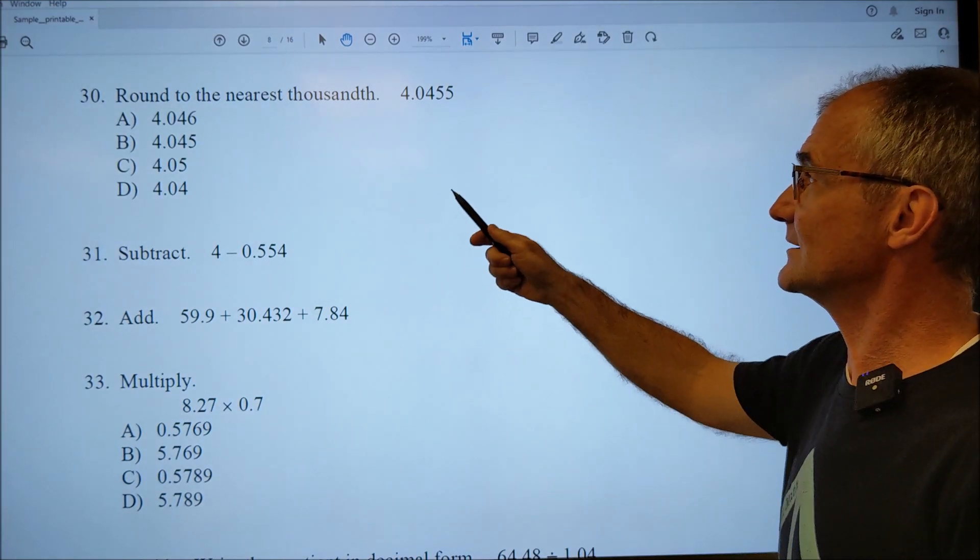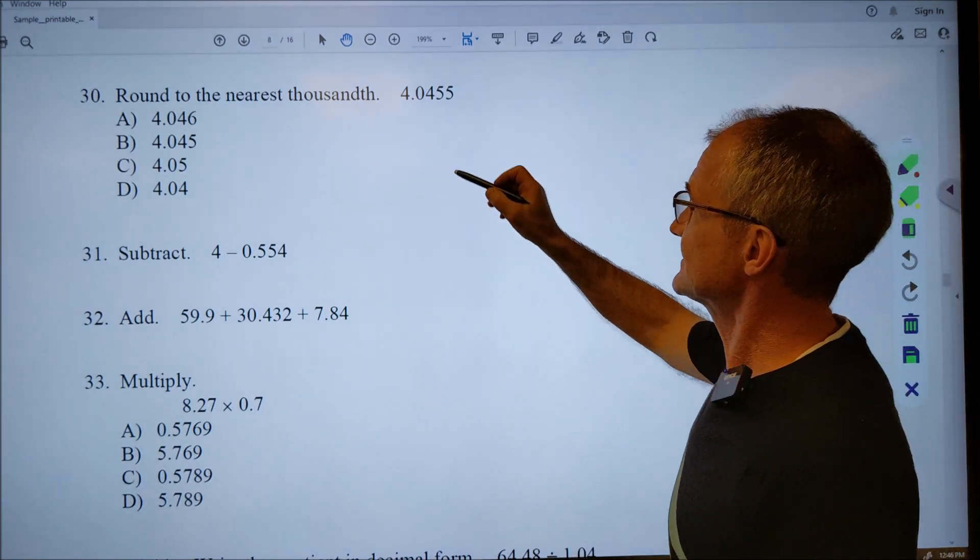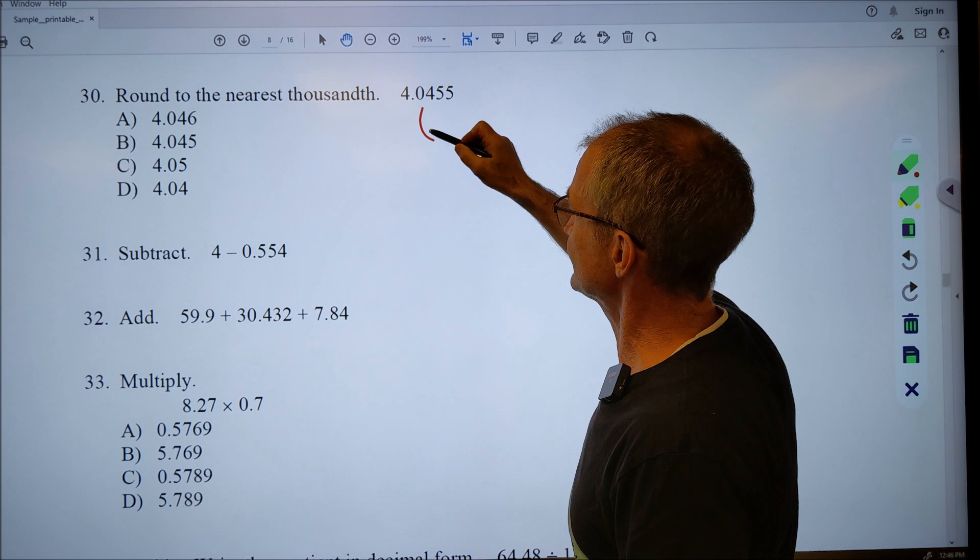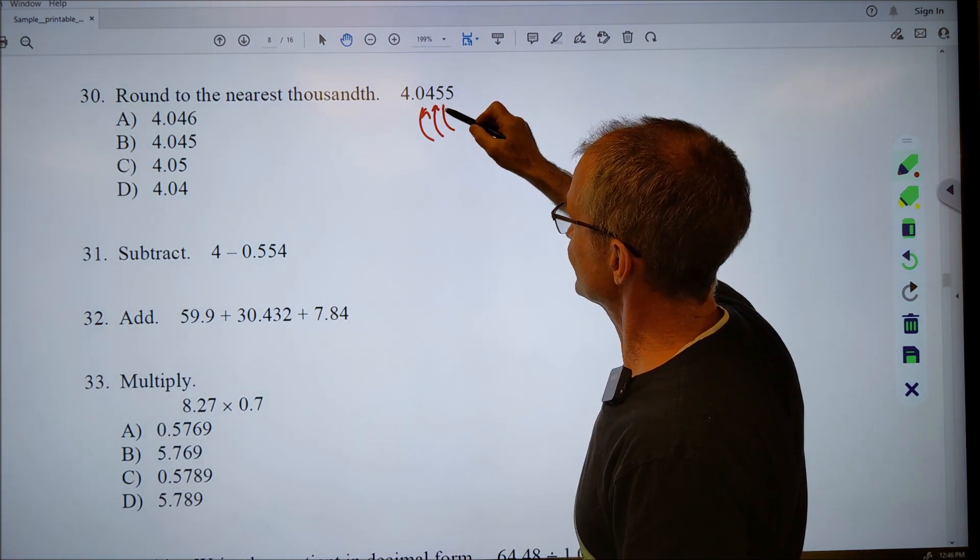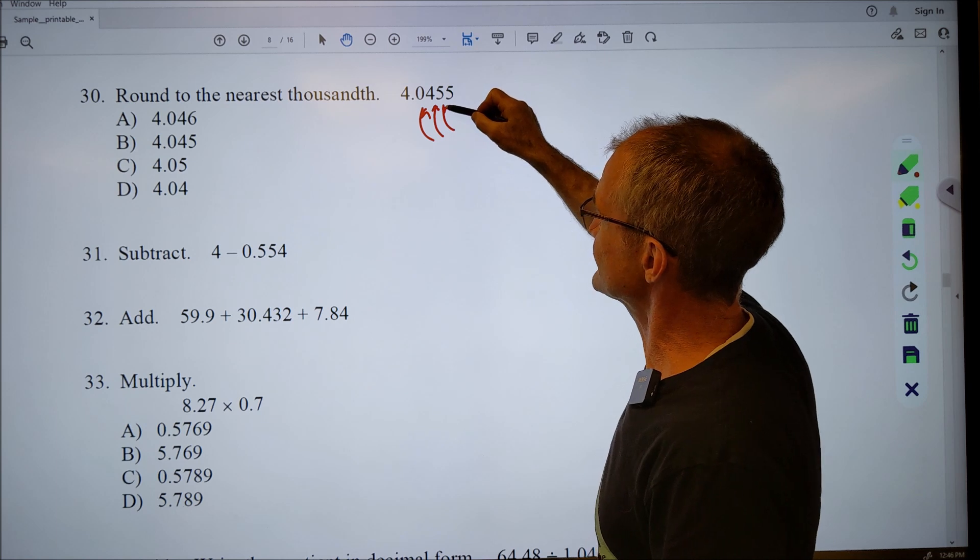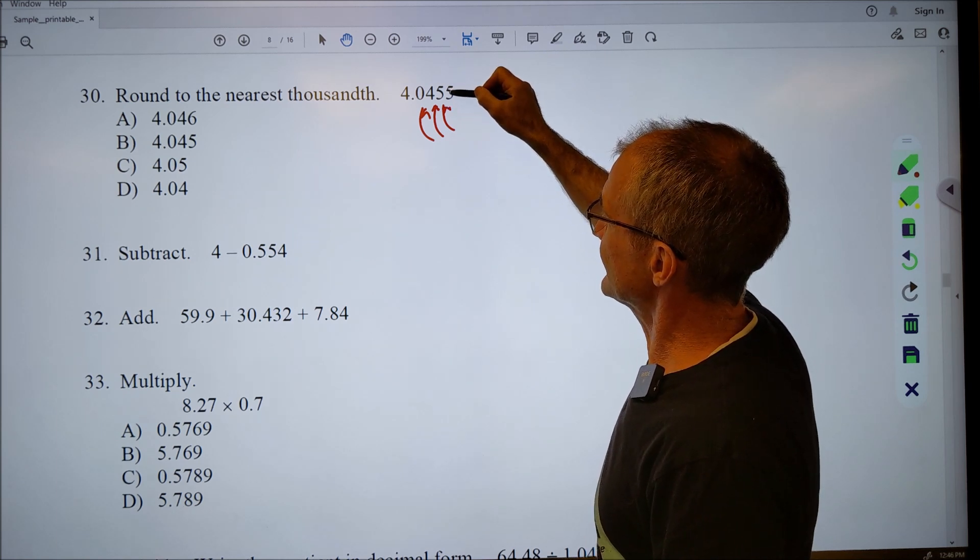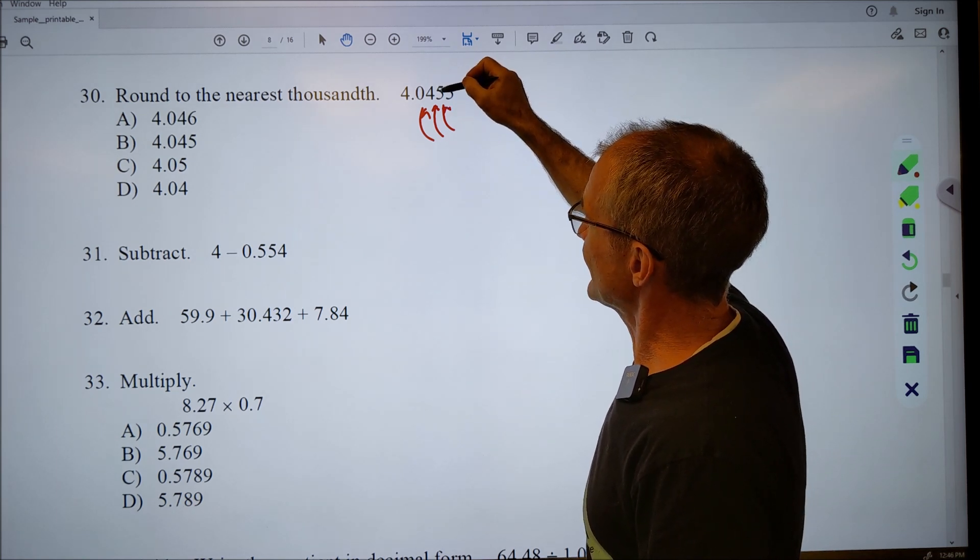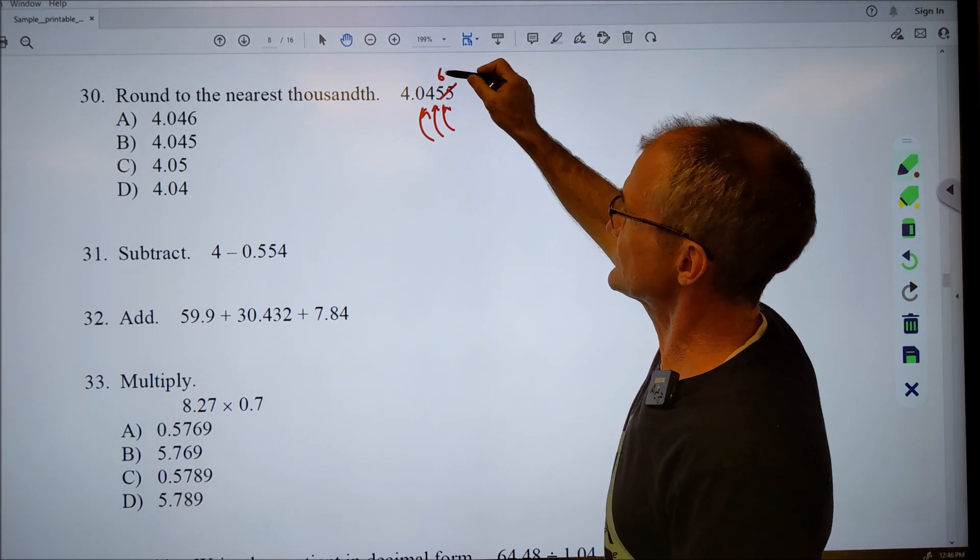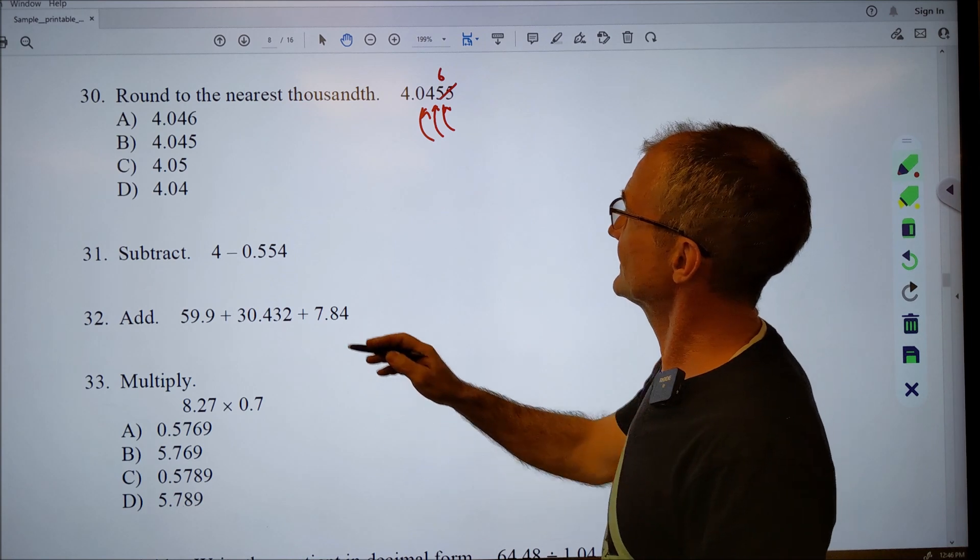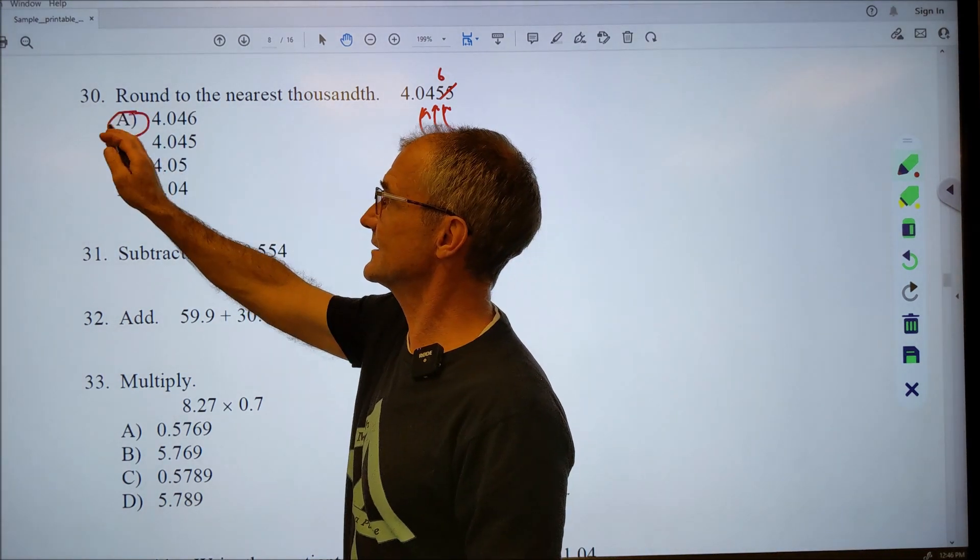Okay, number thirty. Round to the nearest thousandths. So this is actually my tenths place. The next one is my hundredths place. And then that first five is my thousandths place. This is going to bring it up. So I've got to bump that one up. That fifty-five is going to go to a six. So it's .046 to the nearest thousandths. And there it is right there, answer A.